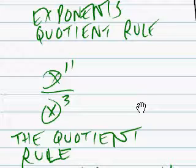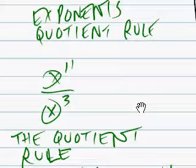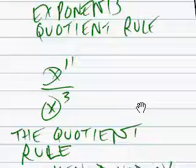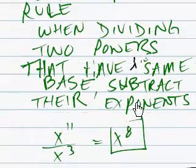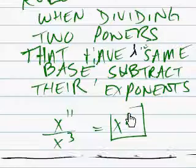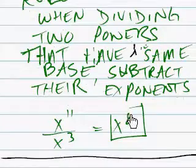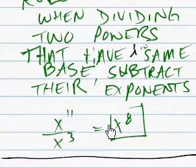So, what is x to the eleventh over x to the third? The answer is x to the eighth. When dividing two powers that have the same base, subtract their exponents. And that's what you get.